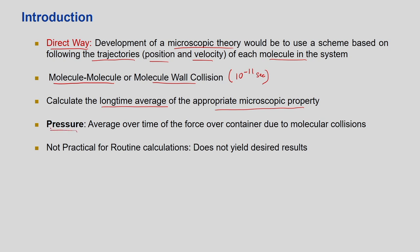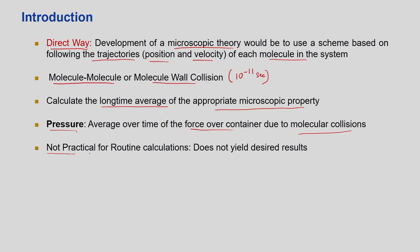These approaches are not practical for routine calculation and do not yield desired results. Even if you compute molecule-wall collisions every 10⁻¹¹ seconds — say 100 nanoseconds — it does not give the desired result because you are working with a very small subset, say only 100 or 12 molecules. It will not give a meaningful result because we need a long-term average.